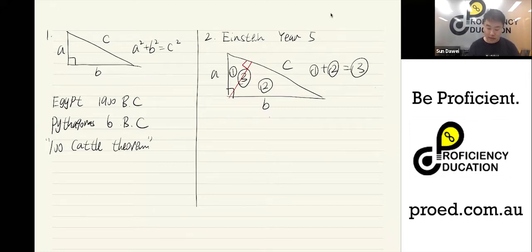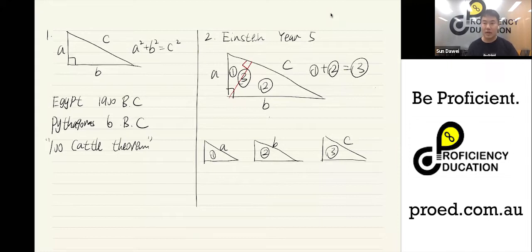He then joined out each right angle triangles respectively. So triangle number one with the hypotenuse A, triangle number two with the hypotenuse B, and the triangle number three with the hypotenuse C. Until now, everyone might realize those are similar triangles where the corresponding sides are proportional, and also the area ratio should be the square of the corresponding side ratios.